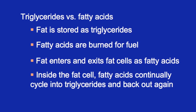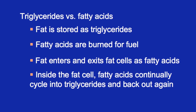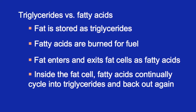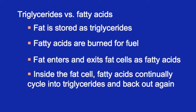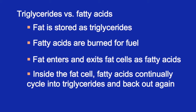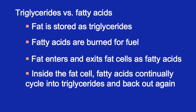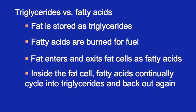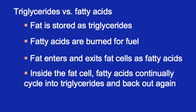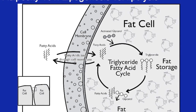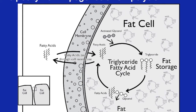The key thing to know is that fat comes in two forms: triglycerides and fatty acids. A triglyceride is formed with three fatty acids bound together by a glycerol molecule. Fat is stored as triglycerides; fatty acids are burned for fuel. The reason fat is stored as triglycerides is because triglycerides are too big to get in and out across the cell membrane, while fatty acids can flow back and forth. So fat enters and exits fat cells as fatty acids, and inside the fat cell they are bound with a glycerol molecule into triglycerides to be stored.